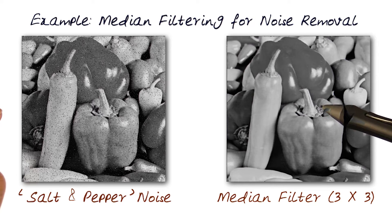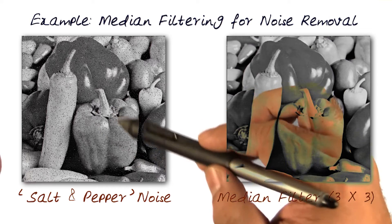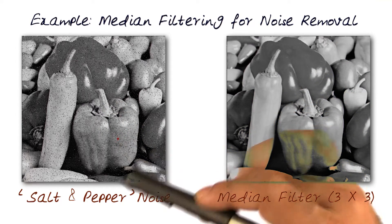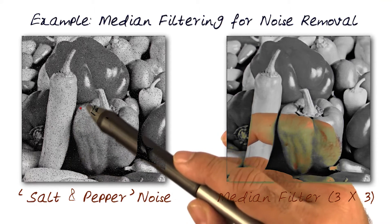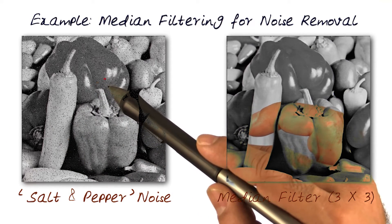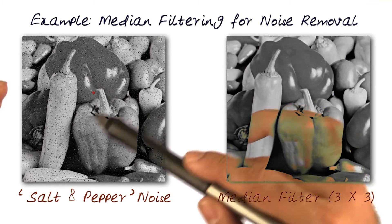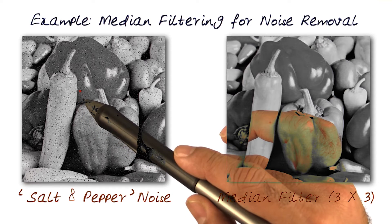One of the classic examples of median filtering is applying it to remove noise. Here I've shown an example of an image that has what is referred to as salt and pepper noise. Basically what happens in this kind of image — it could be because of a bad sensor or some processing errors — is that some of the pixels have either a black value or a white value.